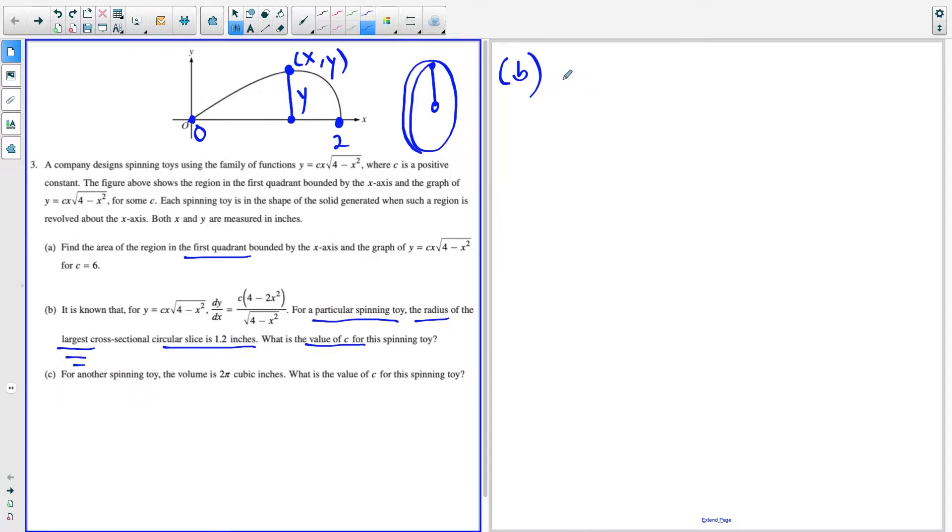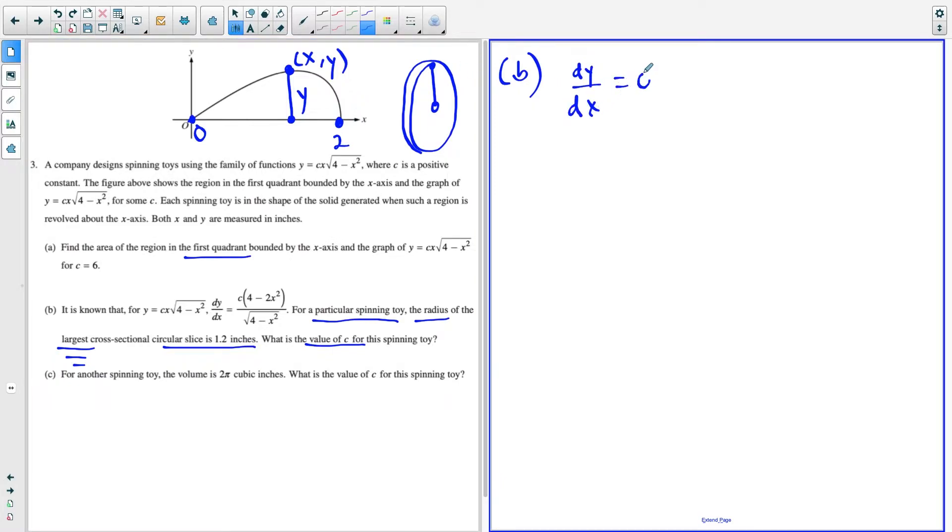But when you're trying to find the maximum value of a function, you need to set your derivative equal to zero. So notice here, we don't have any spots on the curve where the derivative is undefined. It looks like it's going to happen at about here. But between zero and two, this curve is differentiable everywhere. So we're going to set dy/dx equal to zero. And this occurs when the numerator of our derivative is equal to zero.